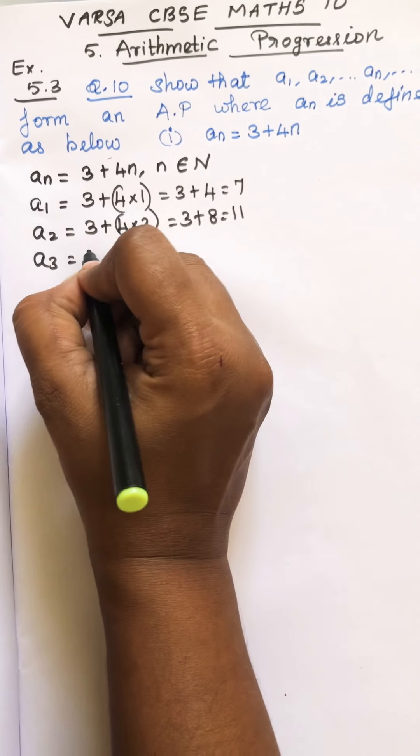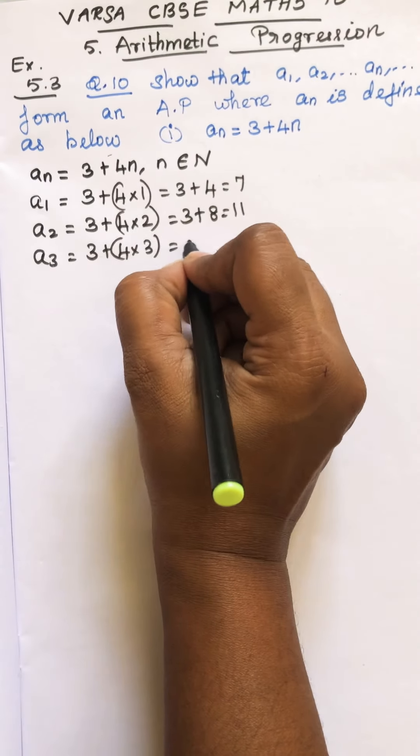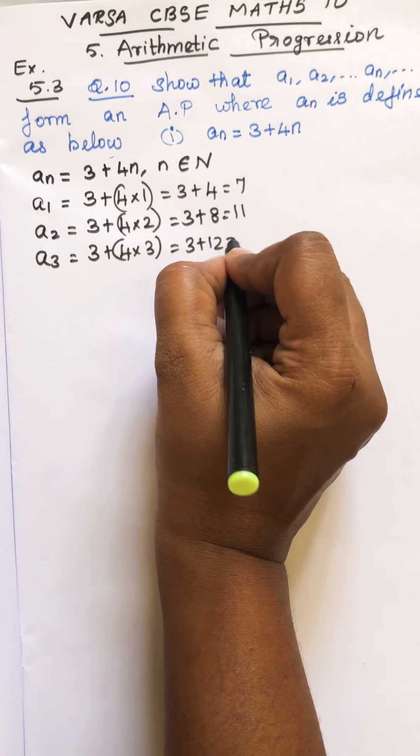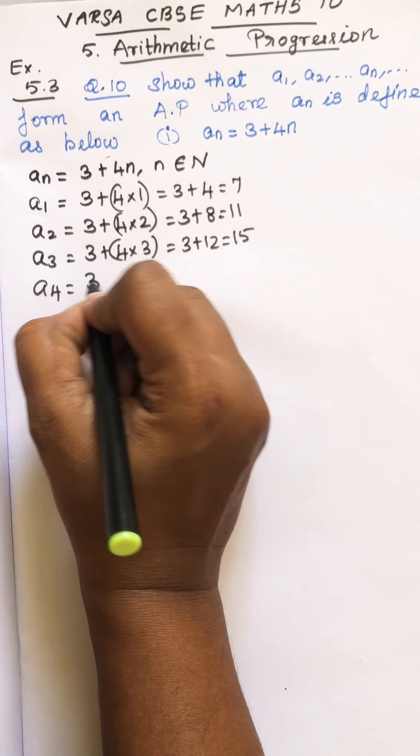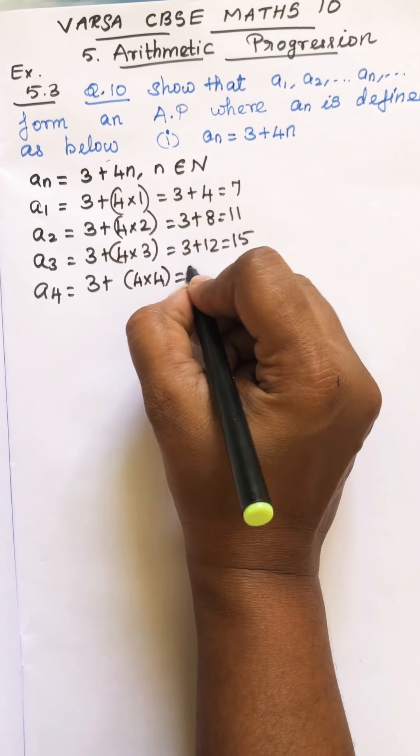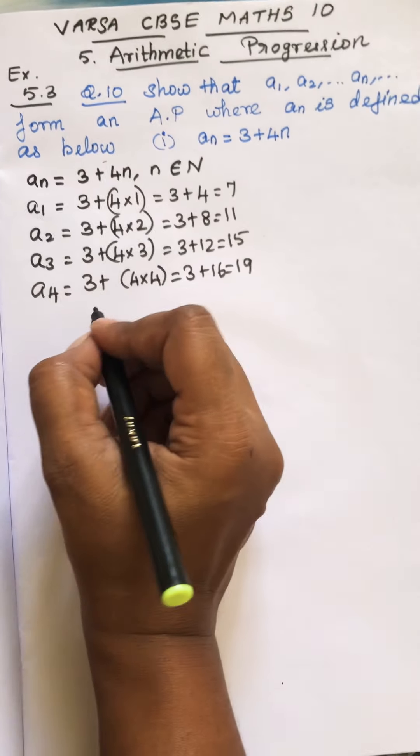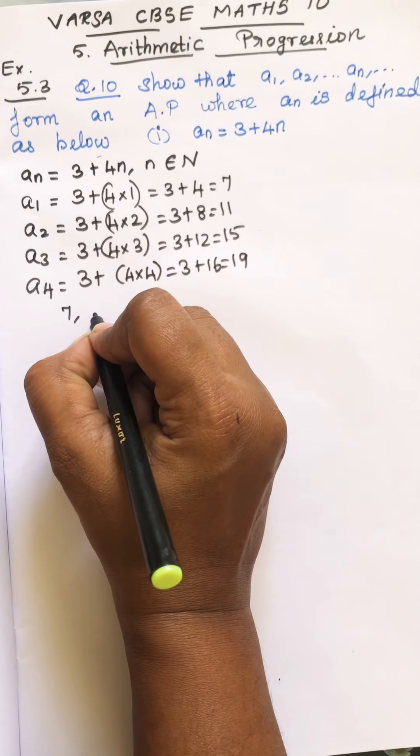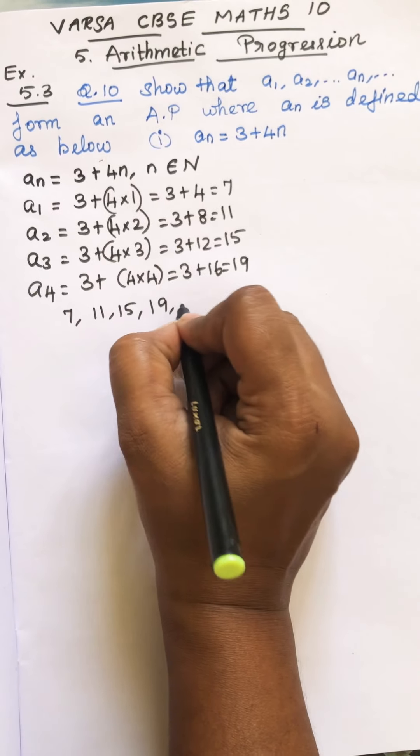What is a3? This is 3 plus 4 into 3, so this is 3 plus 12, you get 15. So a4: 3 plus 4 into 4, this is 3 plus 16, so this is 19. So you got four numbers. What are the numbers? 7, 11, 15, 19, and so on.